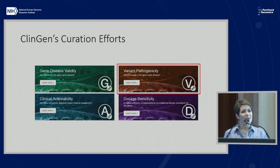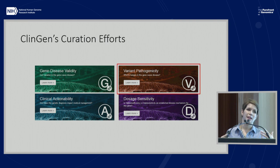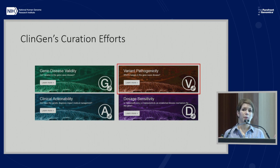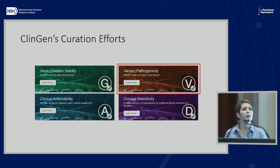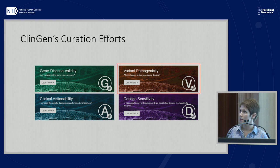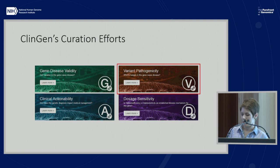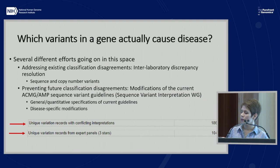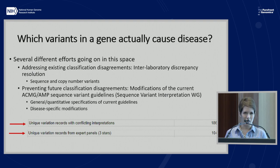We have been funded since 2012, and in those years we've been developing our various processes and the infrastructure to support them. Now we're really at a place where we can put some of these results out into the public. I'll spend the next few minutes quickly walking you through each of our curation activities so you can get a sense of what they are and how you might use them in clinical practice. Since we were just talking about variants in relation to ClinVar, I'll start with the variant pathogenicity efforts.